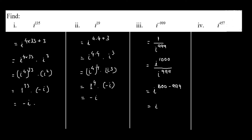For i raised to the power of 457, we rewrite 457 as 4 times 114 plus 1, giving us 456 plus 1. This becomes i^(4×114) times i^1, which equals i^4 raised to the power of 114, times i. Since i^4 equals 1, we have 1 raised to the power of 114, which is 1, multiplied by i. The final answer is i.